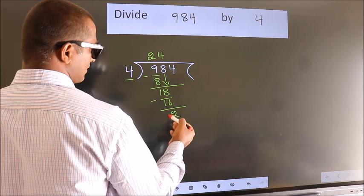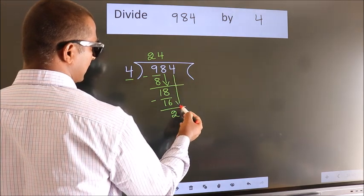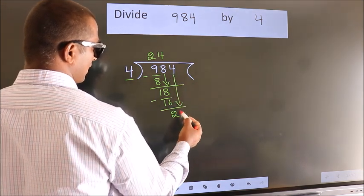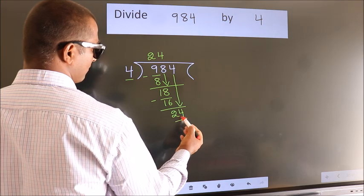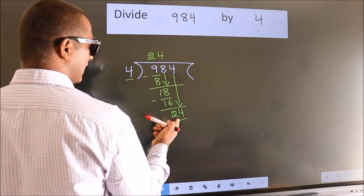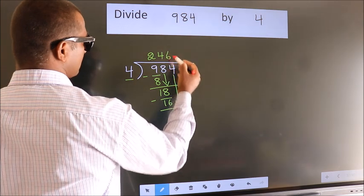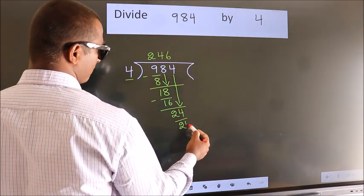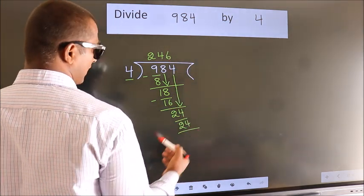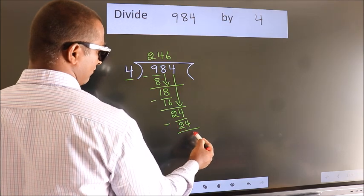After this bring down the beside number. So 4 down. So 24. When do we get 24 in 4 table? 4 6 24. Now we subtract. We get 0.